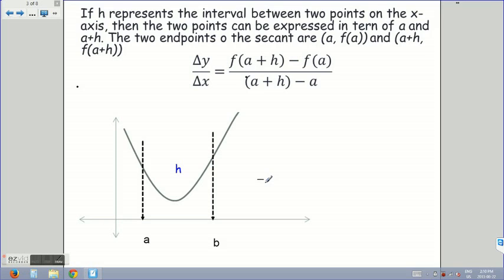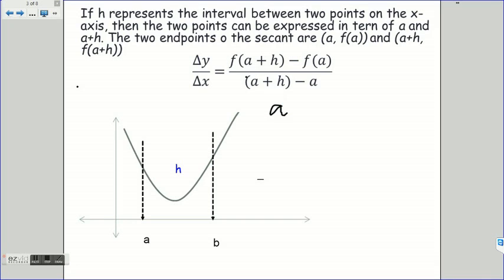Now, if h represents the interval between the points on the x-axis, then the two points can be expressed in terms of a and a plus h. The two endpoints of the secant are then a, f at a, and a plus h, f at a plus h. If we're looking at this, all I've done here is I've said that a and b are separated by a distance of h. In saying that, I can then say that a plus h is simply equal to b. In the previous equation, we can take b, and everywhere there's a b, we can replace it with a plus h.